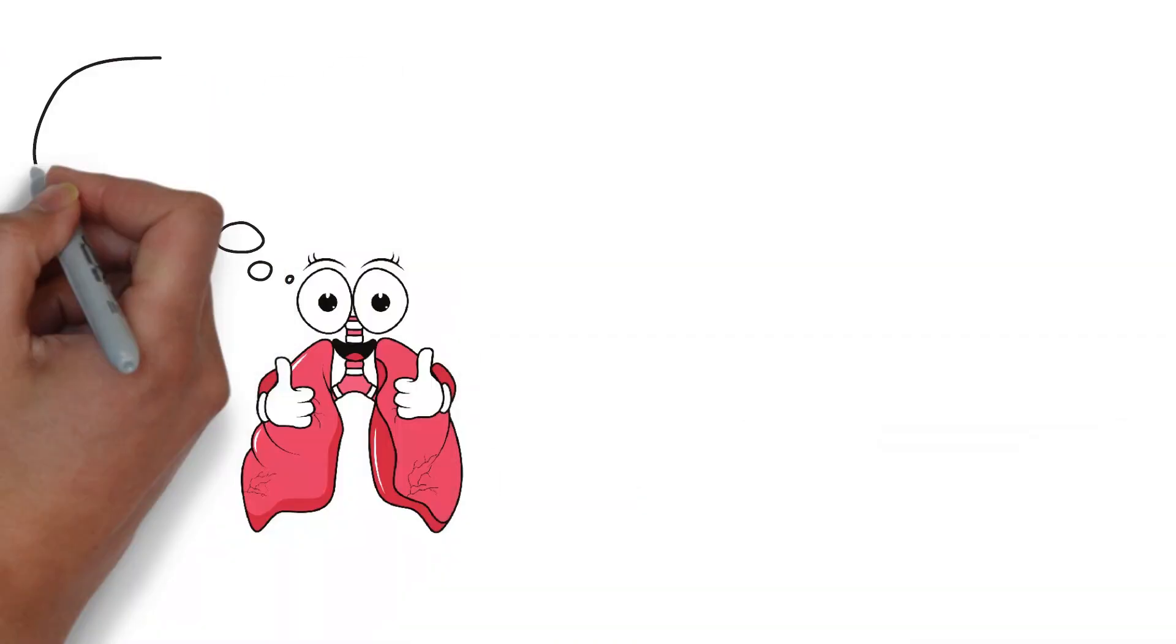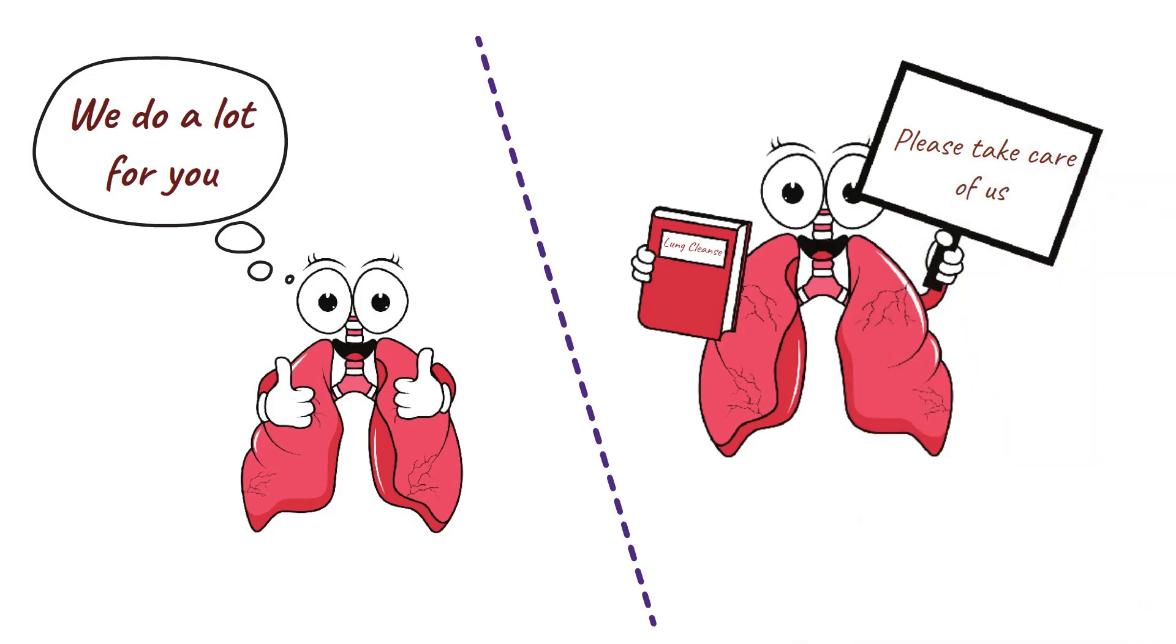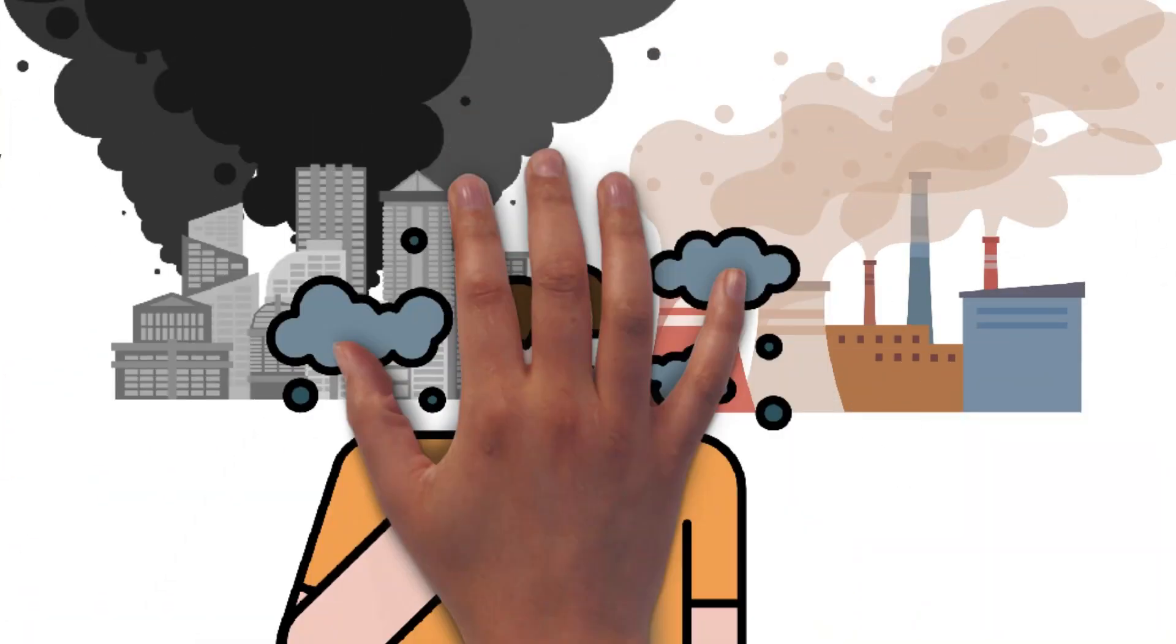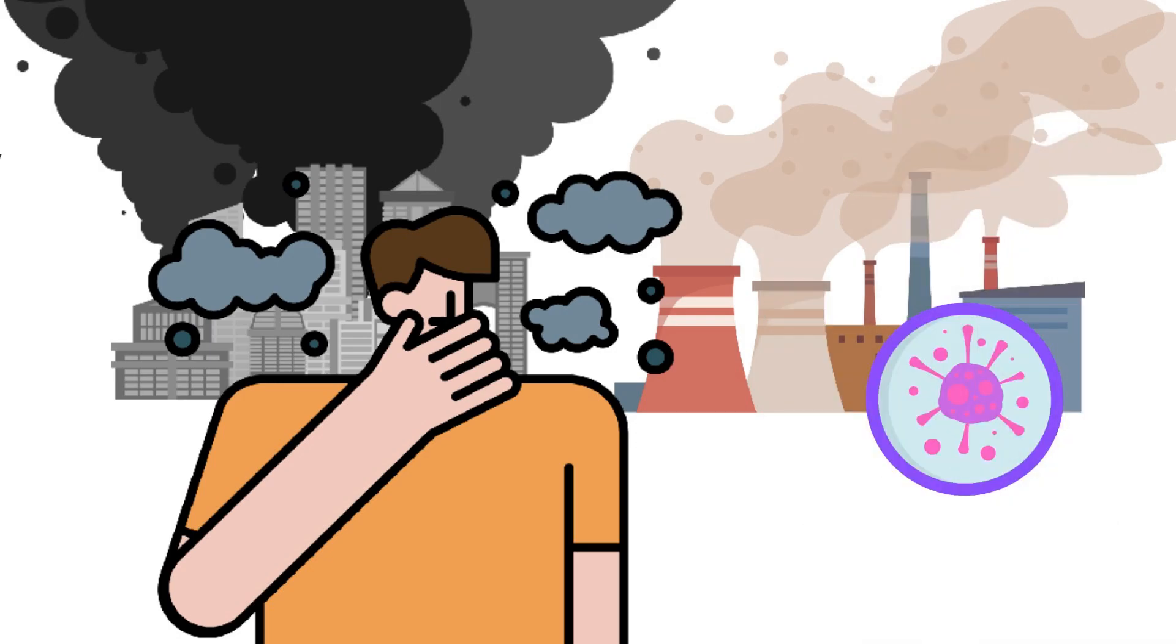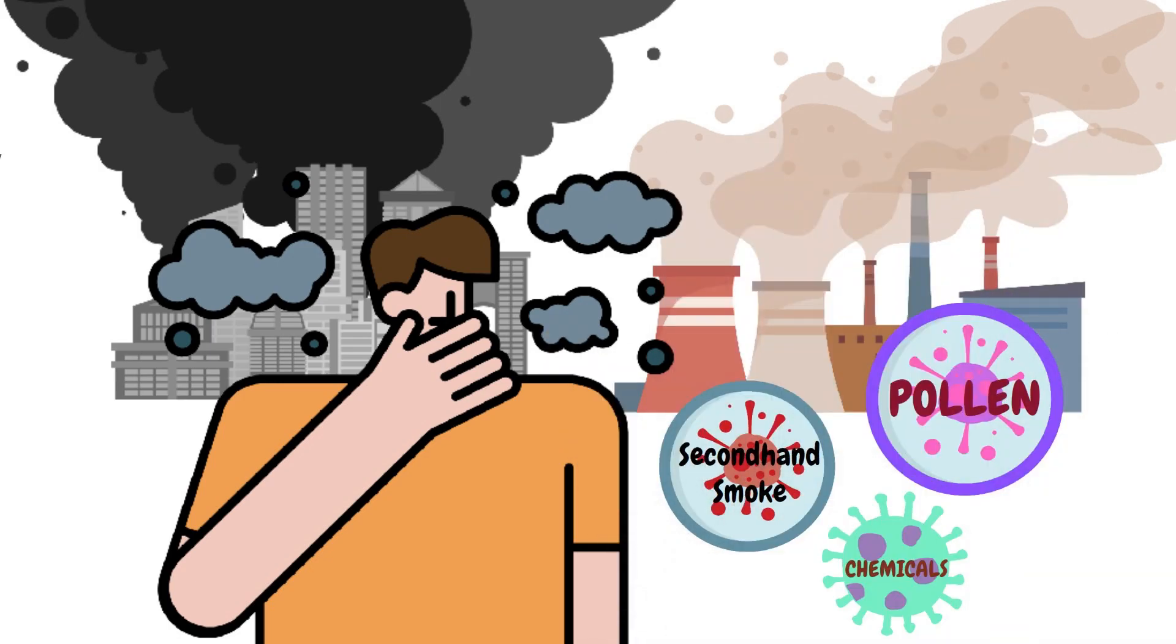Our lungs do a lot for us. Therefore, it's good to take steps to help them work better. The air we breathe in can be contaminated with many kinds of pollutants. Everything from pollen to chemicals to secondhand smoke can be trapped in the air and enter our lungs.